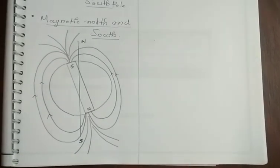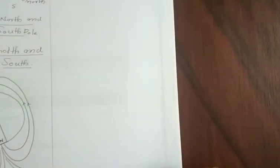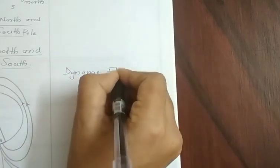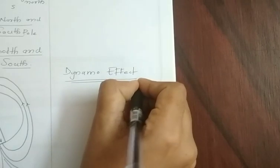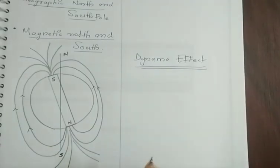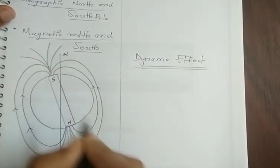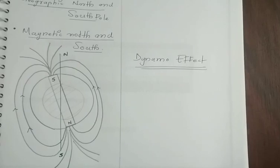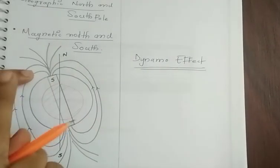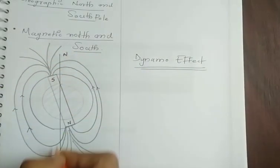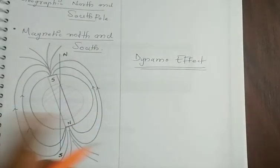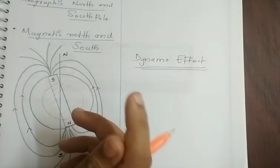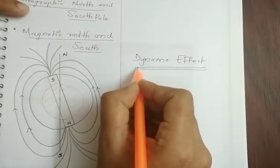So, why does the earth behave as a magnet? The behavior of the earth as a magnet is explained by the dynamo effect. It's just a theory you have to know about. Inside the core of the earth, in the inner parts, there are a large number of metals and molten materials, and when the earth starts rotating about the geographic axis, the molten materials also undergo rotational motion, and when these charged molten particles rotate, they generate a magnetic field.